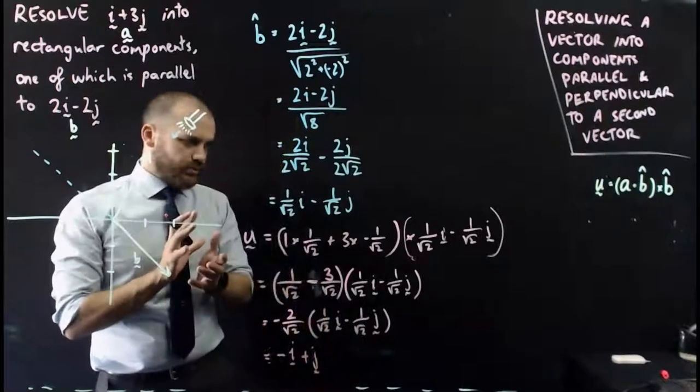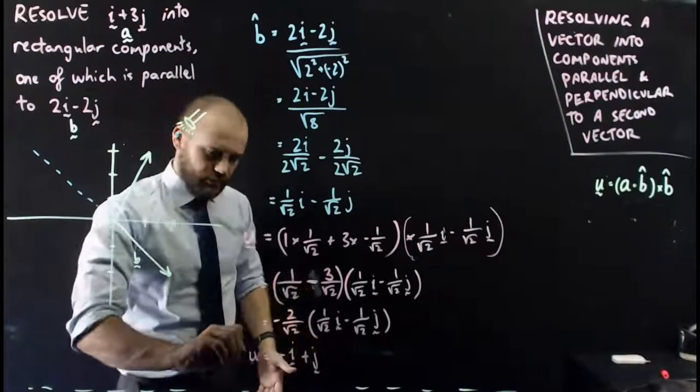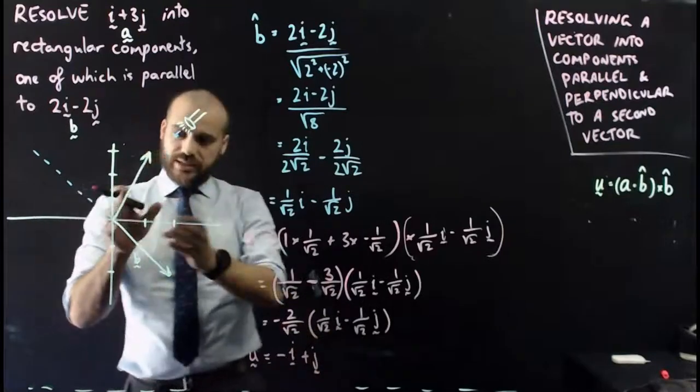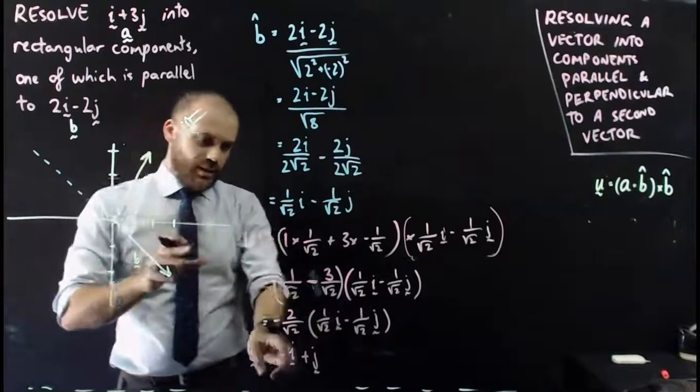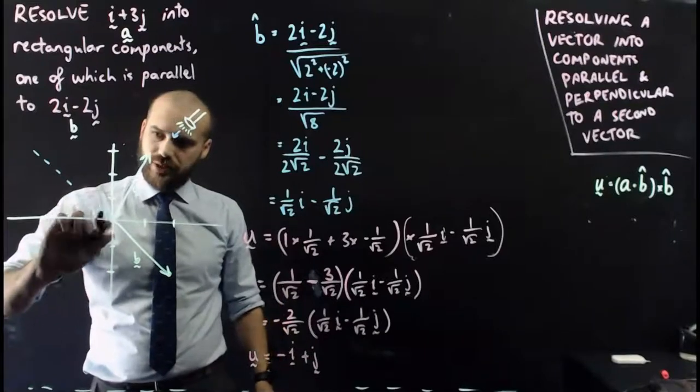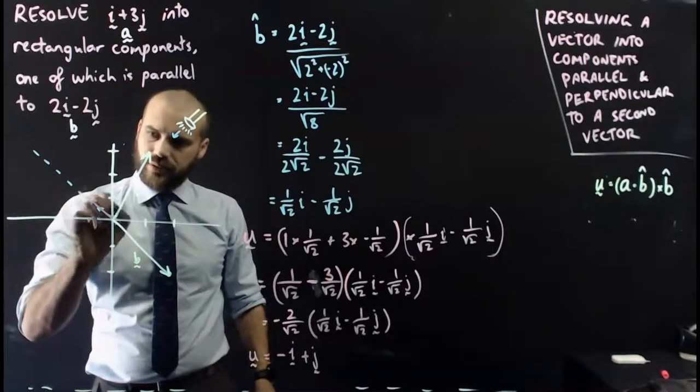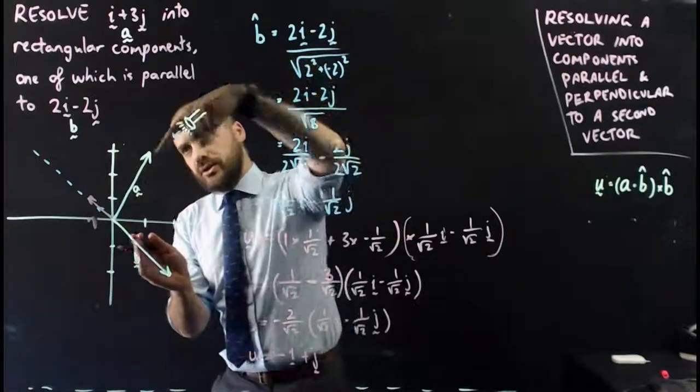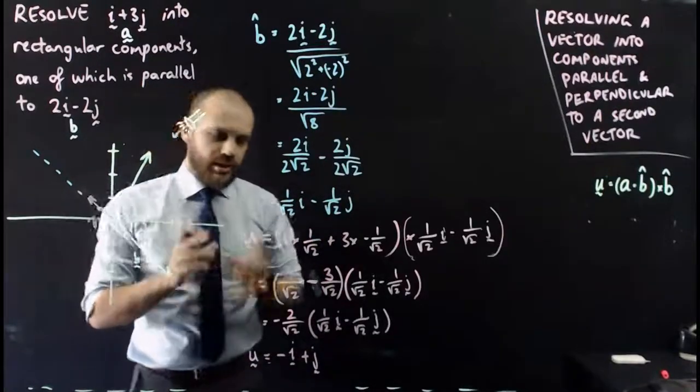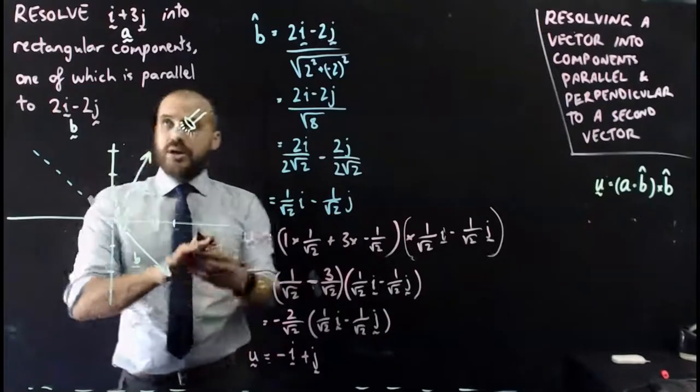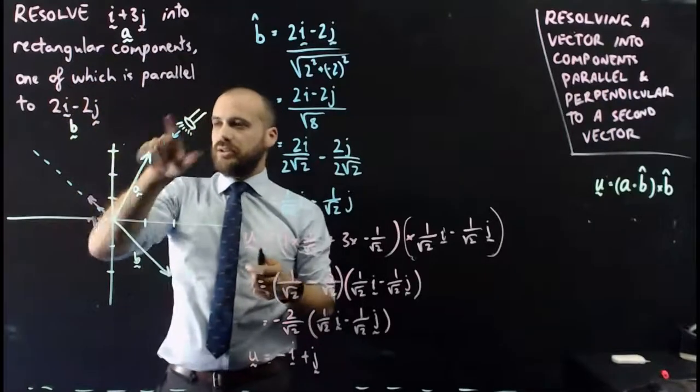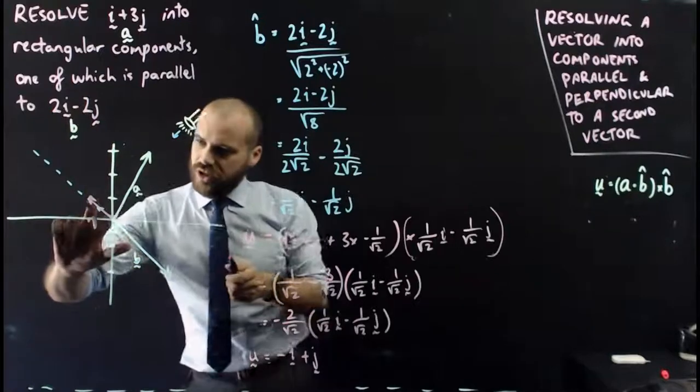Okay. Now, what is that? What is that thing? That's the shadow. This is the shadow that this vector is casting upon vector b. Negative i over here, positive j up here. And you can see, here's my torch, here's my vector, here's the shadow. Obviously things aren't quite to scale, but you get the idea. Now, I'm halfway there because I'm supposed to resolve i and 3j into rectangular components, one of which is parallel to 2i minus 2j. So I found the one that's parallel.